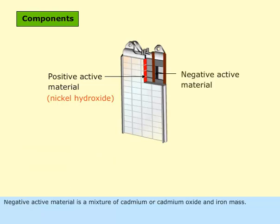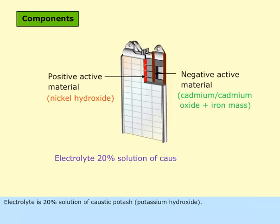Negative active material is a mixture of cadmium or cadmium oxide and iron mass. Electrolyte is 20% solution of caustic potassium hydroxide.